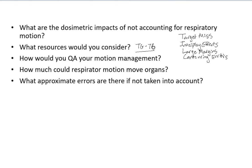How would you QA your motion management? Varian has an infrared box — essentially a respiratory motion phantom. There's also a Quasar phantom that moves a target. You want to test that the tracking is accurate and that it beams off when out of tolerance. You at least need to do an annual end-to-end test from CT to treatment, and for that you want to follow TG-142. TG-76 also discusses it. Don't go too far into the weeds — just mention what you know.